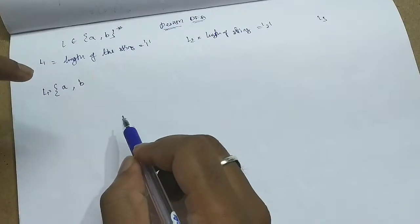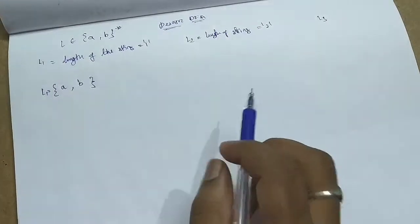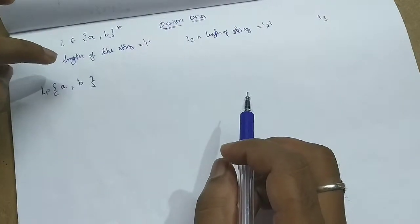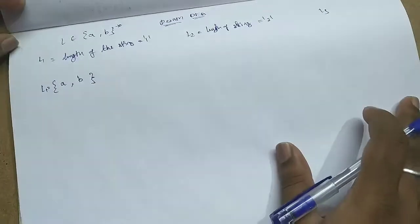Does 'aa' come? No, the length will become 2, so it won't come. Length of string equal to 1, length of string equal to 2, and length of string equal to 3. First we will construct and then we will extend.